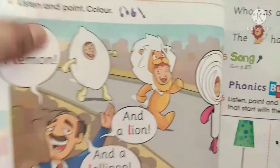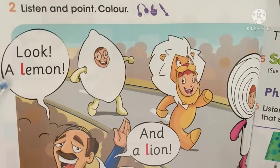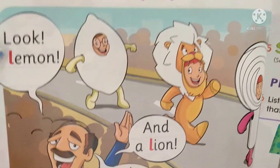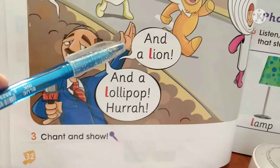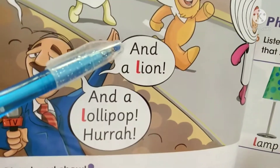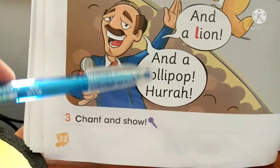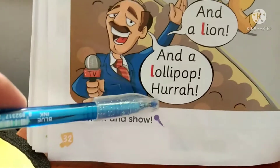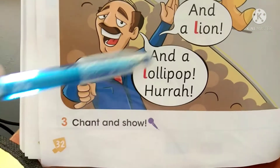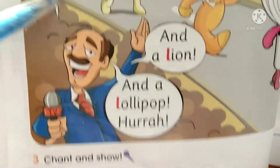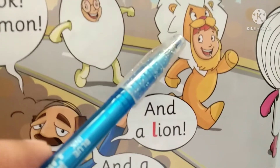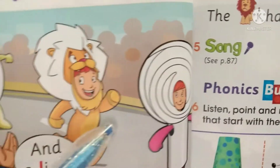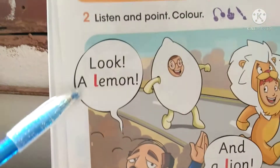Now let us continue. Listen and point and then color. Look — a lemon, and a lion, and a lollipop, hooray! This is the lemon, this is the lion, and this is the lollipop.